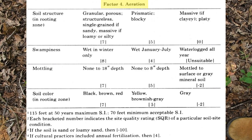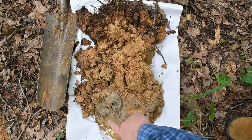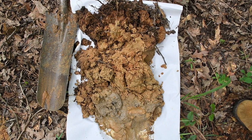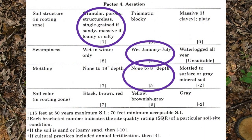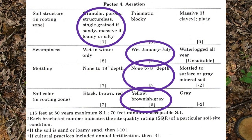Our final table is aeration. Single-grained sandy comes up again — under aeration it actually helps us, whereas it hurt under moisture. For swampiness, I can tell I'm here in May so wet January through July seems reasonable — this will dry out in the summer. For mottling, I only dug to 16 inches and I'm starting to get some gleying, but in the top eight inches there's no mottling, no gray — so I'm circling the middle option. For soil color in the rooting zone, yellow and brownish-gray seems reasonable with some subtle reds. That completes all the tables.